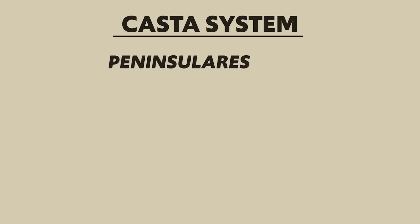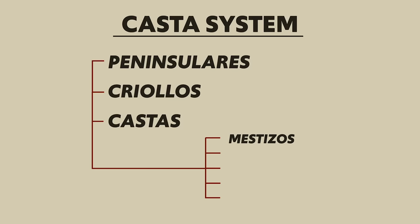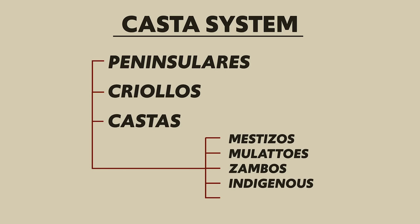The last thing I'll mention is the social changes that occurred when the eastern and western hemispheres were united. The most significant change in social hierarchy was in the Americas. With the introduction of Europeans, a completely new social hierarchy was established called the casta system — a new way of organizing society based on ancestry and race. At the top were the peninsulares, those born in Europe. Below them were the criollos, or creoles, Europeans born in the Americas. Below both were the castas: first, mestizos of mixed European and indigenous ancestry; second, mulattoes of mixed European and African ancestry; third, zambos of mixed indigenous and African ancestry. And at the bottom were the indigenous people and the African people themselves.